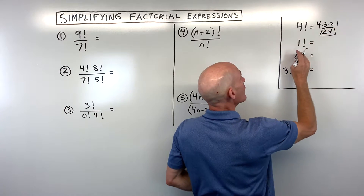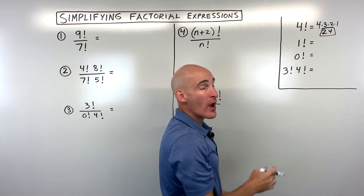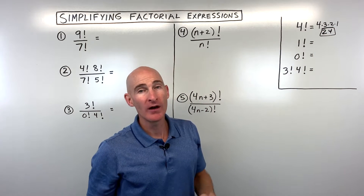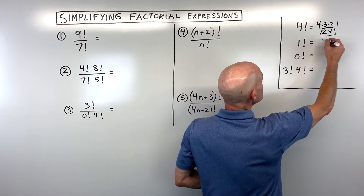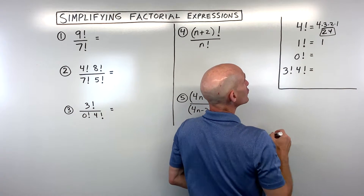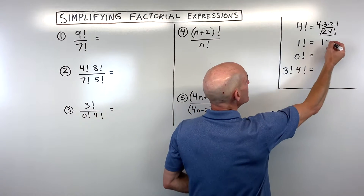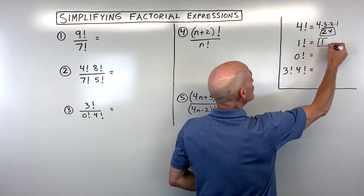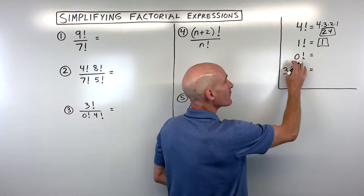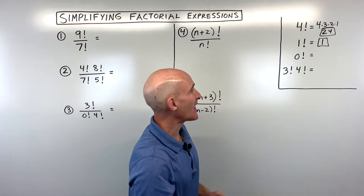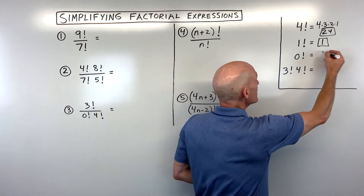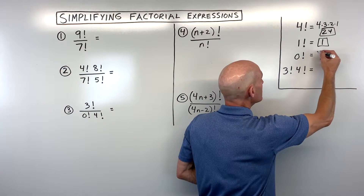If you look at one factorial, that of course is already at one, so one factorial is just one. And if we look at zero factorial, this one you're going to want to memorize — zero factorial is actually just one.